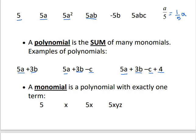A monomial is still considered to be a polynomial with one term. So all of these are monomials: 5x, or 5xyz are all monomials because there's only one term — you don't see any pluses or minuses.